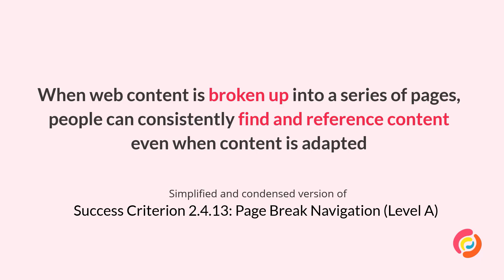Our last Level A criterion is 2.4.13, Page Break Navigation. In essence, this requirement asks that when web pages are broken up into a series of pages — think multiple pages with page numbers — people can consistently find and reference content even when the content is adapted. This means that whether the content changes, say you increase text size, those page numbers remain the same. Although the criterion itself doesn't reference printed material, one best practice recommendation is that page locations match across both digital and print materials, so people can find their place based on consistent page numbers whether looking at a print version, a default version, or a version where text size has been changed.